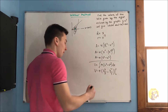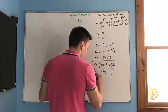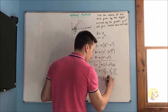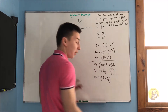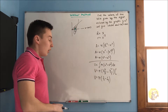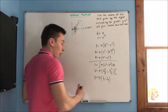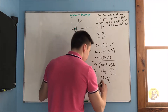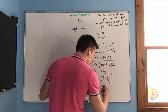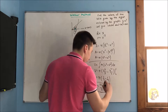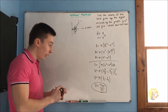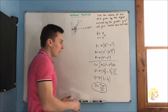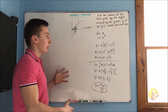So we get our volume is equal to pi times 1 third minus 1 seventh when we plug in 1. When we find our common denominators, our volume is equal to 4 pi over 21. That is going to be our volume. That is really all you are going to have to do for this problem.